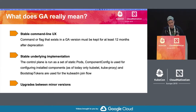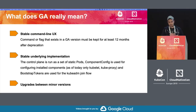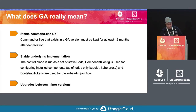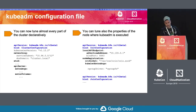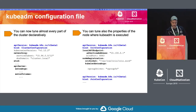We have a stable underlying implementation with no plans to move away from static pods for the control plane components. We have component config for the kubeadm configuration itself, also for kubelet and kube-proxy, and we use bootstrap tokens for the join and init workflow with no plans to move away from that. We also provide upgrade paths between Kubernetes minor versions, supporting only from one minor to the next minor.